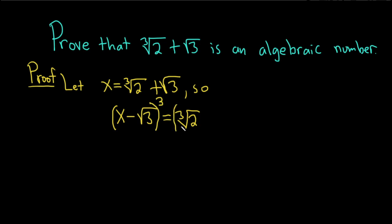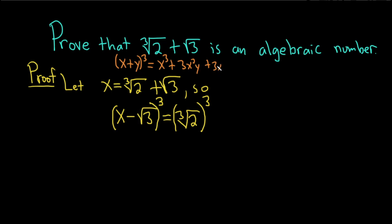Let's apply a formula to make this a little bit easier. If you have (x + y) cubed, this is x cubed plus 3x squared y plus 3xy squared plus y cubed. You can get it from the binomial theorem, or you can use Pascal's triangle as a memory trick to memorize it.